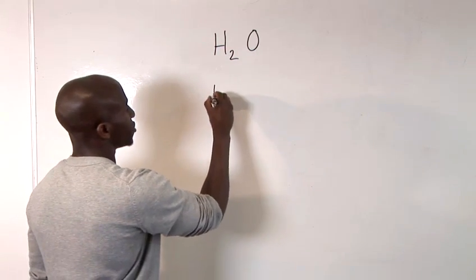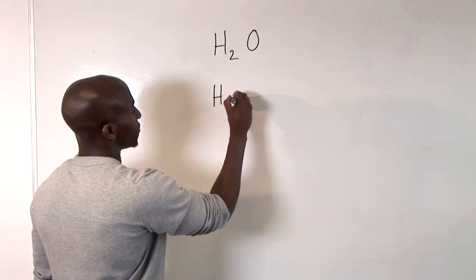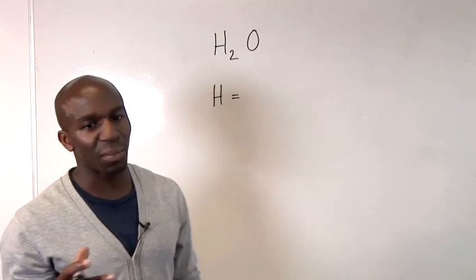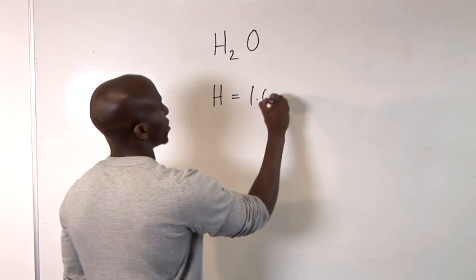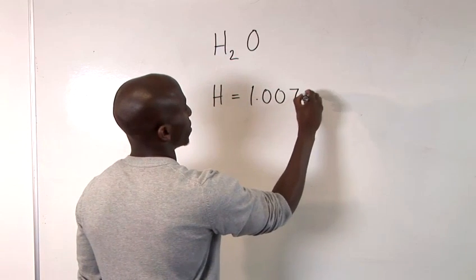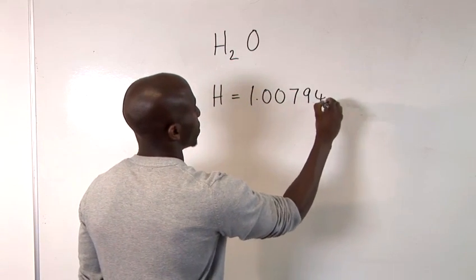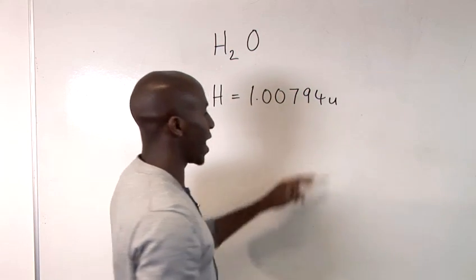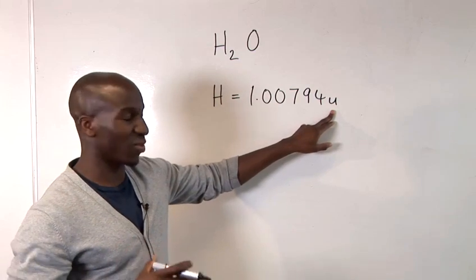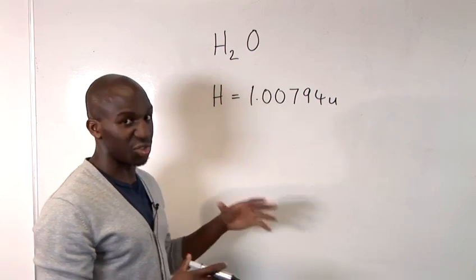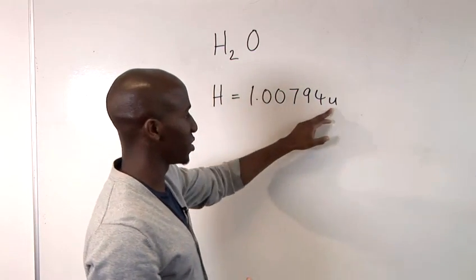So, hydrogen, you should find, has a molecular weight of 1.00794 U. And this U is basically just a 12th of, say, a carbon 12 atom. It's just used as the standard kilogram measurement.